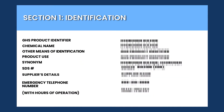Section 1 of the SDS is called Identification. This section covers basic information such as the product's common name and any synonyms, its identification number, and what the product actually does, including its recommended uses and any restrictions on use. This section also includes emergency contact information for the manufacturer, importer, or other responsible parties.